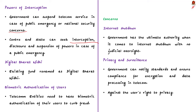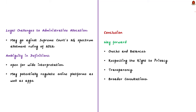Moving to concerns and challenges with the act: The first concern is regarding internet shutdown — the act has a specific provision enabling the government to order suspension of the internet with no judicial oversight, going against the recommendation of the Standing Committee on Information Technology. The second issue is privacy and surveillance — a clause allows the government to notify standards for encryption and data processing in telecom, raising fears that it may prevent popular chat apps from encrypting messages, going against users' right to privacy. Thirdly, legal challenges to administrative allocation: the Supreme Court's 2G spectrum allotment ruling of 2012 recommended auctioning of scarce natural resources, and the administrative allocation provision may go against this ruling.